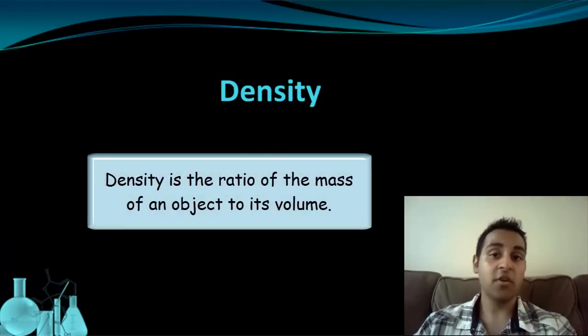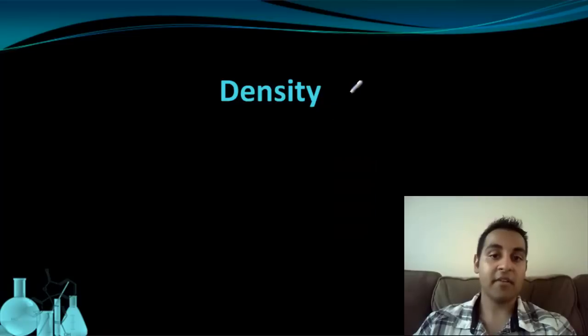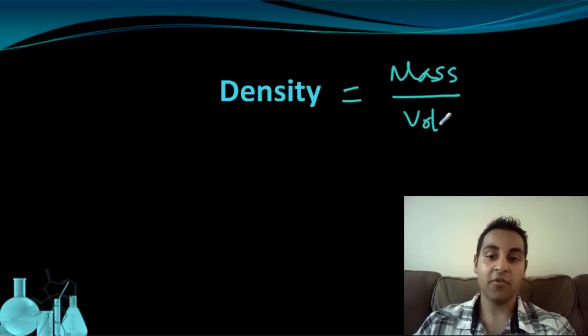Density is the ratio between an object's mass and its volume. Mathematically, density equals mass divided by volume. You'll typically see this represented as an equation d equals m over v.